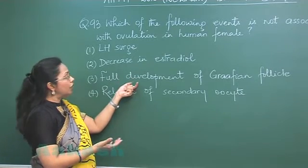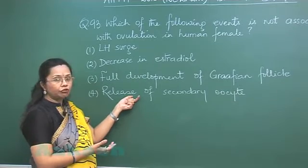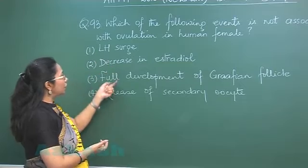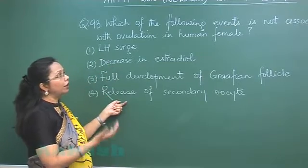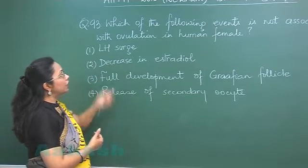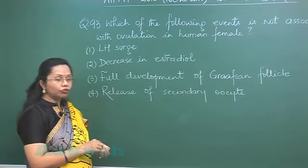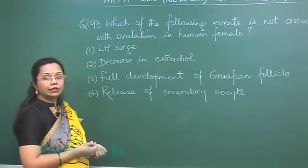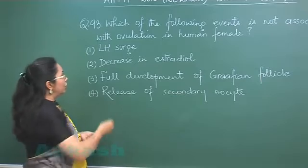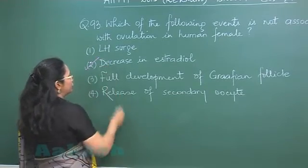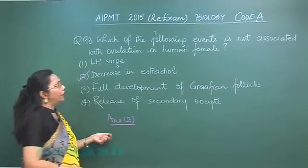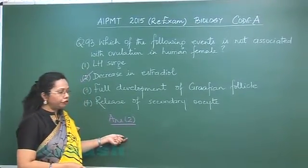Once the Graafian follicle ruptures, it releases the secondary oocyte. Options 1, 3, and 4 are occurring during ovulation. What is not occurring is a decrease in estradiol — in fact, the reverse is true: estradiol increases to give positive feedback to LH. So the answer is option 2. Moving on to question 94.